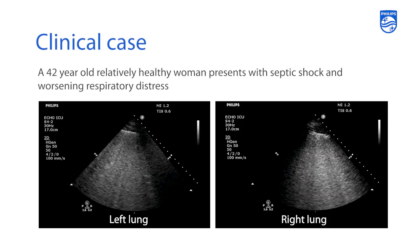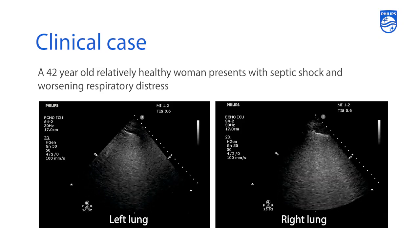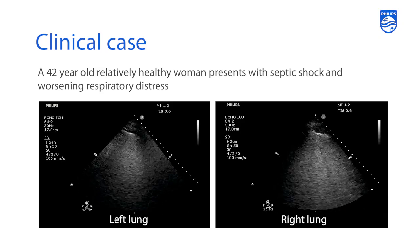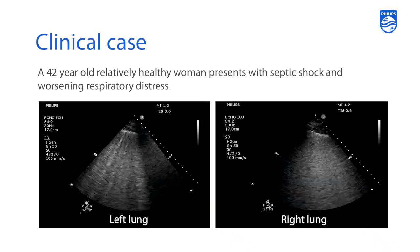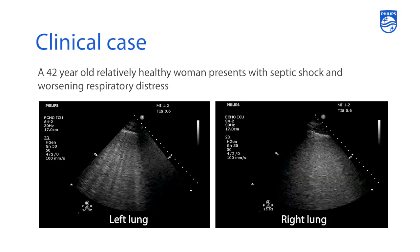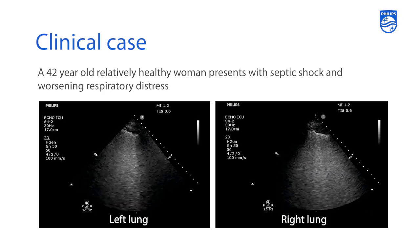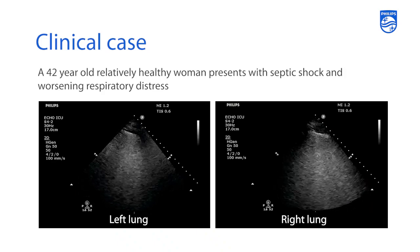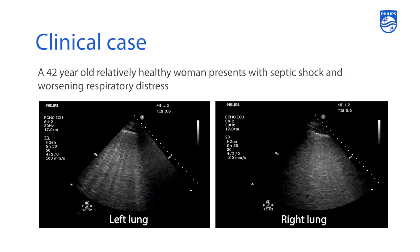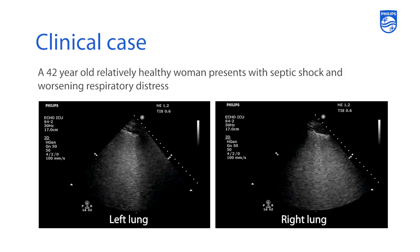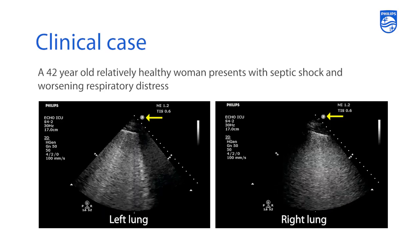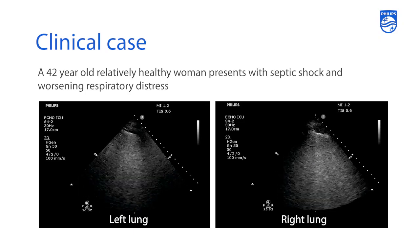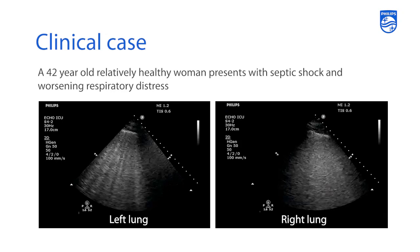Let's go over a case to wrap up these segments. This is a 42-year-old female who presented with septic shock and worsening respiratory distress. She had been very aggressively resuscitated with fluid and was becoming more and more short of breath when we performed this ultrasound. The ultrasound image was acquired in the cardiac preset, which is why the orientation marker is on the right side of the screen. We performed a cardiac evaluation first then moved to lung ultrasound, so the orientation marker remained on the right, classic for cardiac imaging.